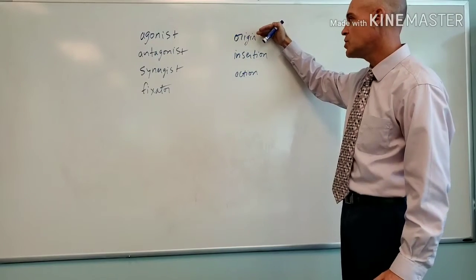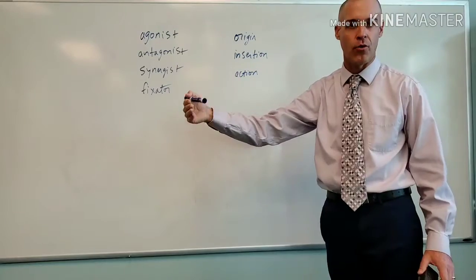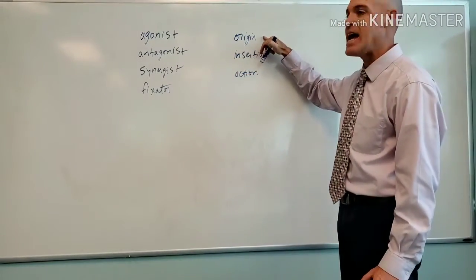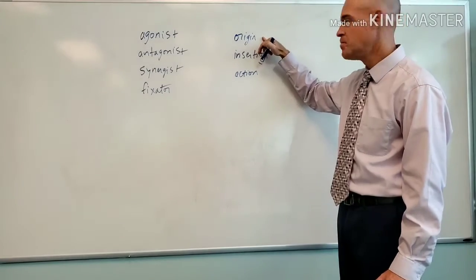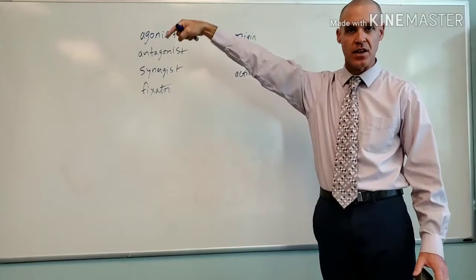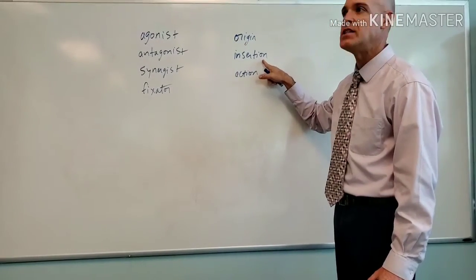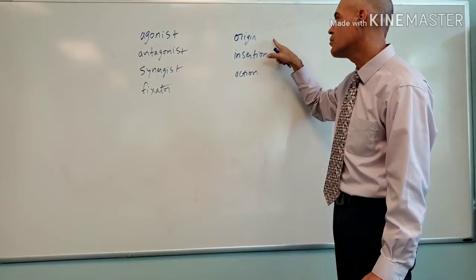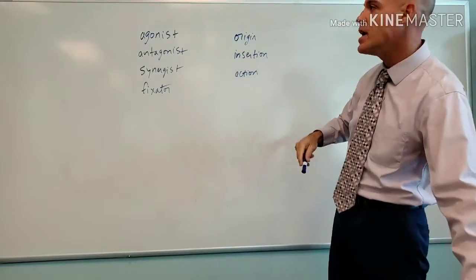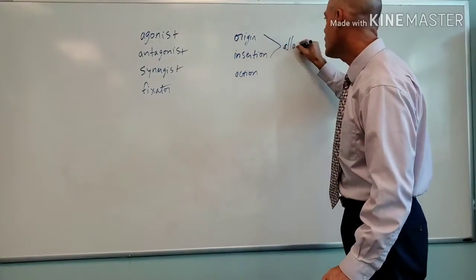Origin is basically an attachment point for a muscle, and it's the less movable attachment. Insertion is the other attachment — the other end — and it's going to be the more movable attachment. There's a lot of confusion and difficulty with that. So these two are attachment points — these are muscle attachments.